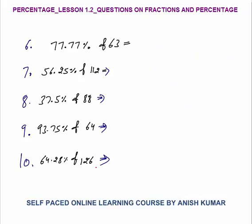Questions 6 to 10 — first try to solve yourself with minimum possible time, with or without writing. Then look at the way I have solved. 77.7% of 63 — can I say this is 7 times 11.11% of 63? Now 7 × 11.11% = 7 × (1/9) of 63. So the answer is 9 sevens are 63; 7 × 7 = 49, which is your final answer.